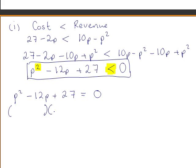Solving for p, I will factorise — you should be familiar with this already. You are looking for two numbers that multiply to give 27 and add to give minus 12, so that is minus 9 and minus 3.